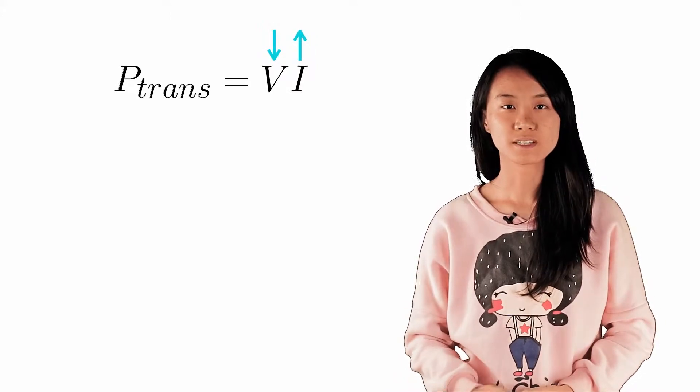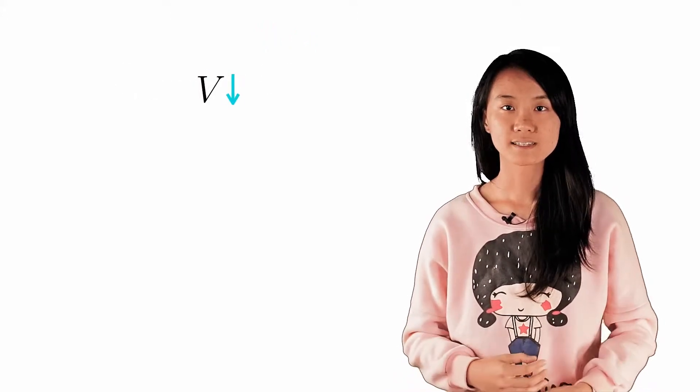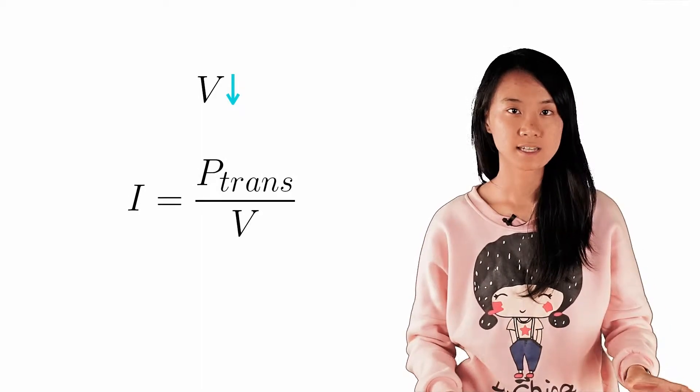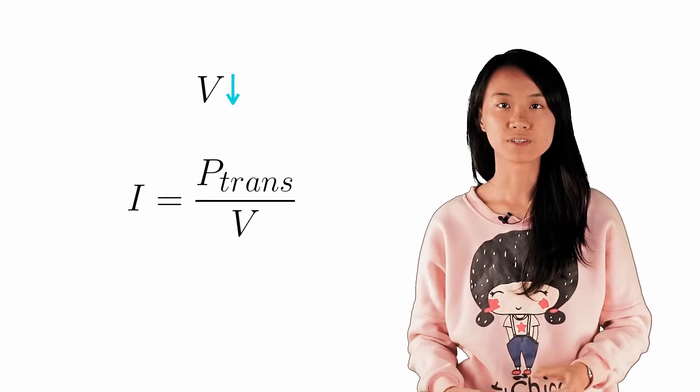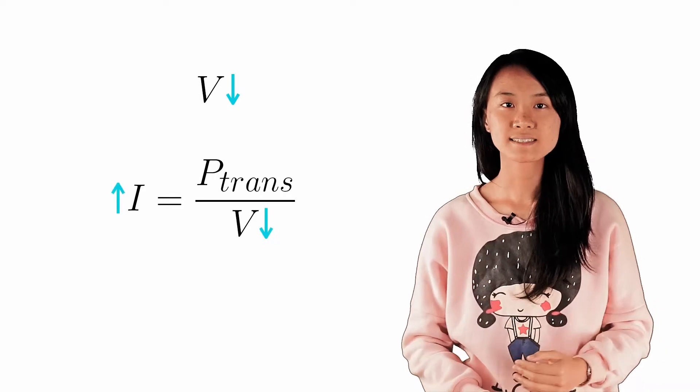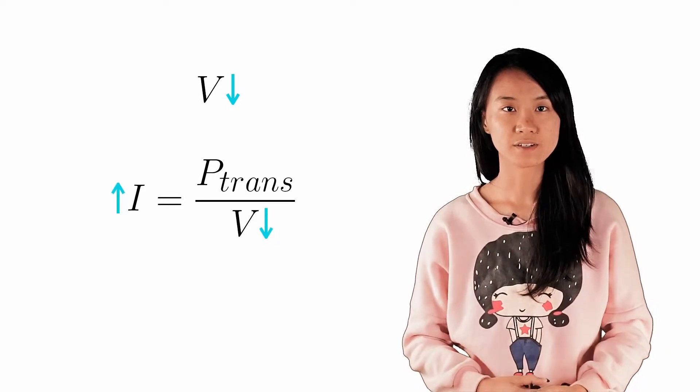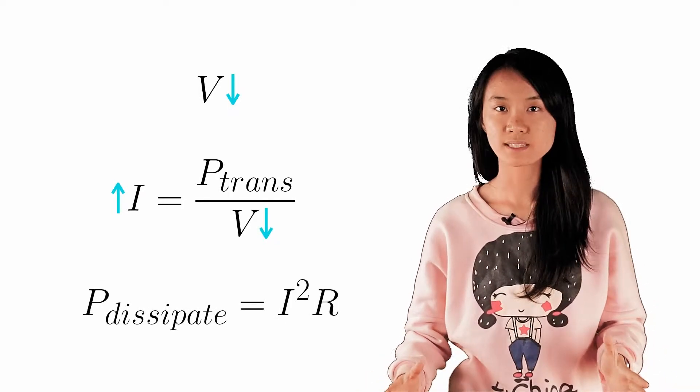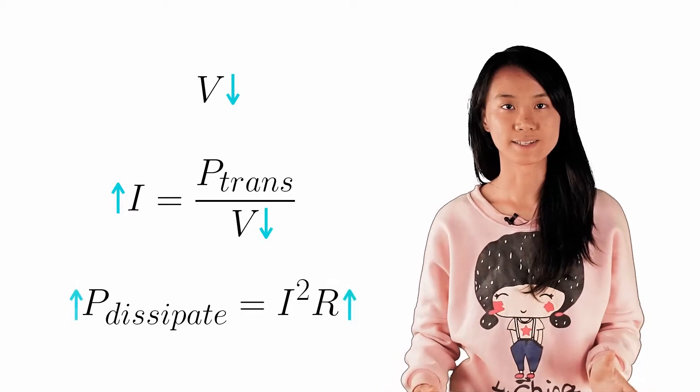Suppose you choose to use a low voltage. Then the current that travels that long distance is given by P over V, which is high. Hence, since the wire undergoes joule heating over this long distance, the power dissipated is I²R, which is very high as well.